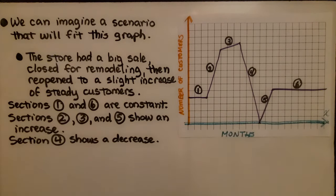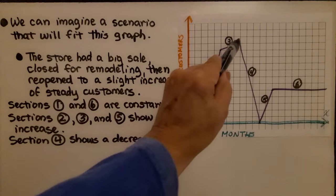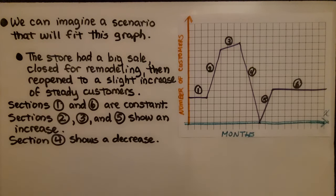We can see Section 1 and 6 are constant, and Sections 2, 3, and 5 show an increase. We have an increase, an increase, and then we have another increase here. And we can see that Section 4 is a decrease.